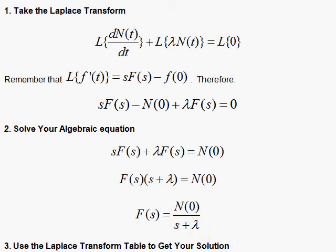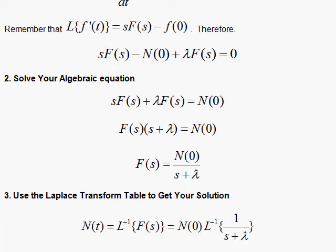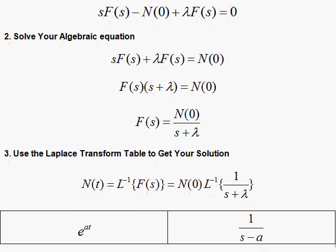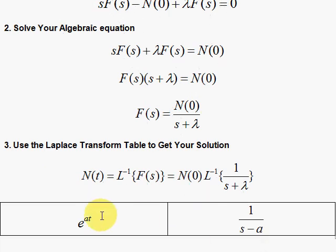Use the Laplace transform table to get your solution. So we need the inverse Laplace transform of 1 over s plus lambda. This is just a constant that comes right out. And we look at our table and we'll find this somewhere in our table. We'll find this thing where you have 1 over s minus a. And in the Laplace transform space, that nice little result corresponds to in the regular space to an exponential e to the at.